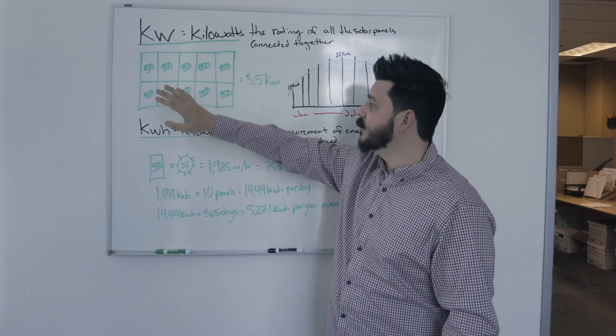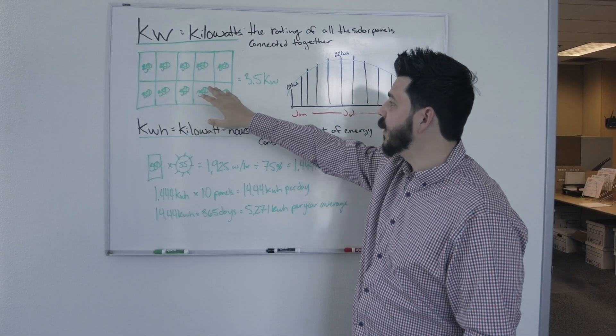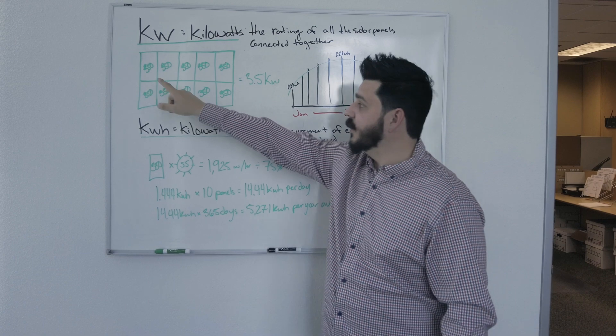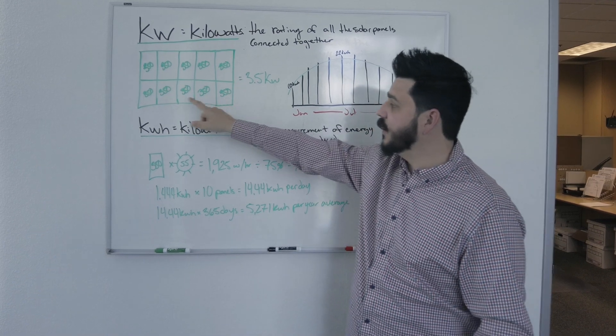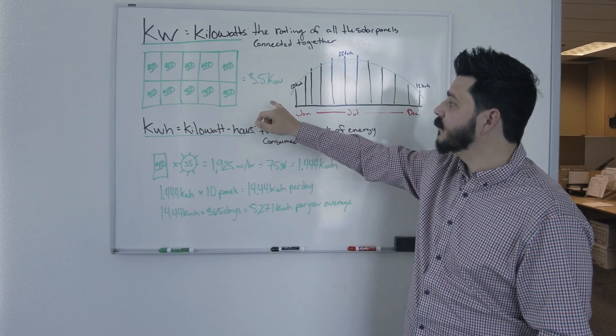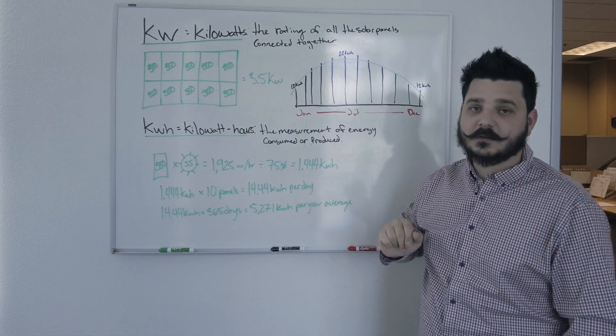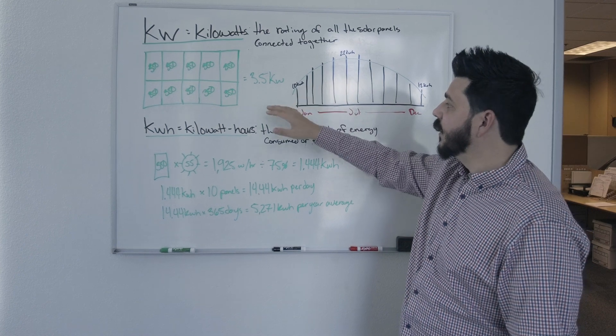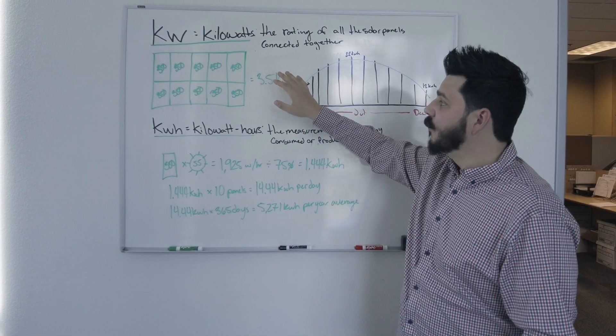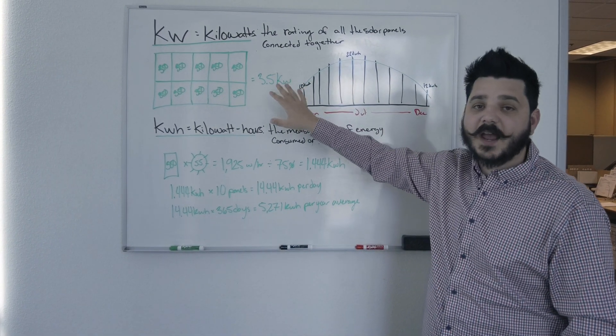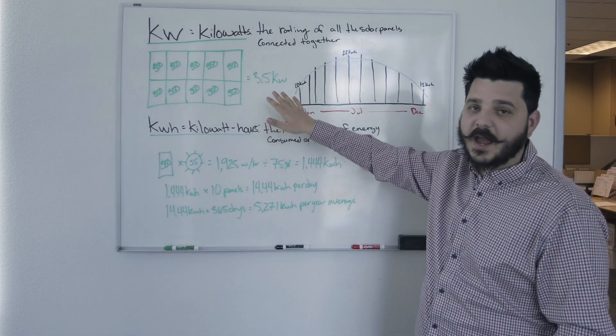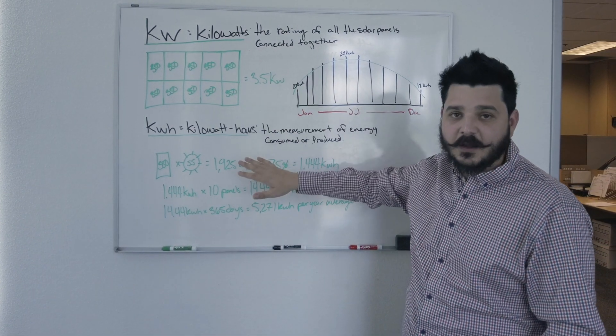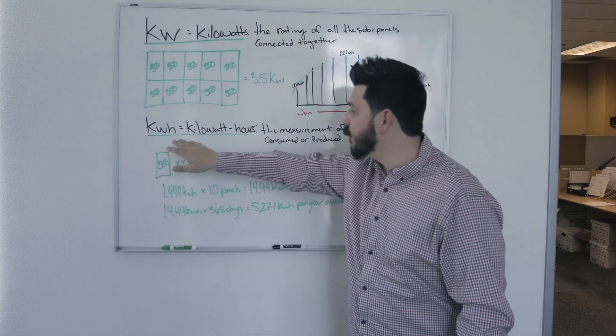For this example, I'm using Qcells 350 watt modules. If you add 10 panels together, you have a 3.5 kilowatt solar system. If you have more panels, the rating is going to increase. Now this has nothing to do right now with the amount of energy the system will produce. We have to actually do some math to figure out your kilowatt hours.